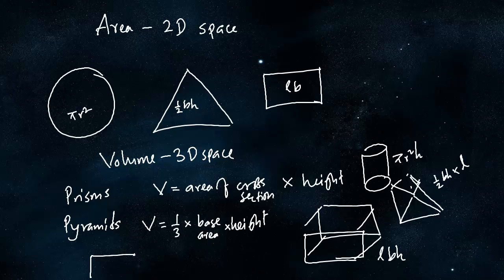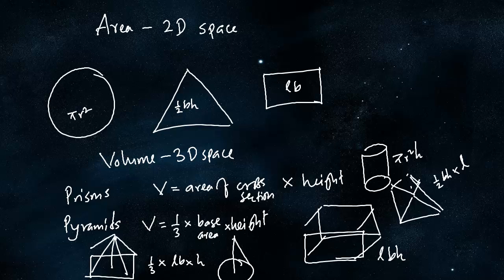If the pyramid has a rectangular base, the volume would be one third times length into breadth into height. If it has a circular base — known as a cone — the volume would be one third pi r squared h. And when the pyramid has a triangular base, it would be one third times half into base into height into height.